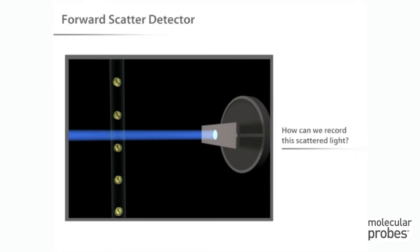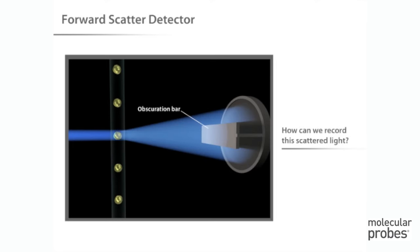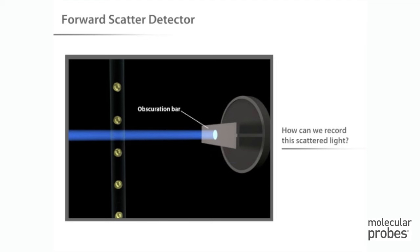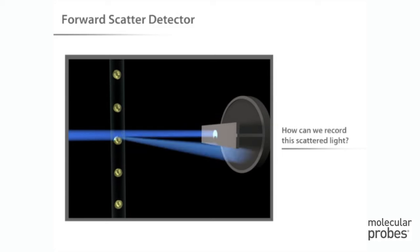But how can we record this scattered light? Light is quantified by a detector that converts intensity into voltage. In most cytometers, a blocking bar, called an obscuration bar, is placed in front of the forward scatter detector. The obscuration bar prevents any of the intense laser light from reaching the detector. As a cell crosses the laser, light is scattered around the obscuration bar and is collected by the detector.